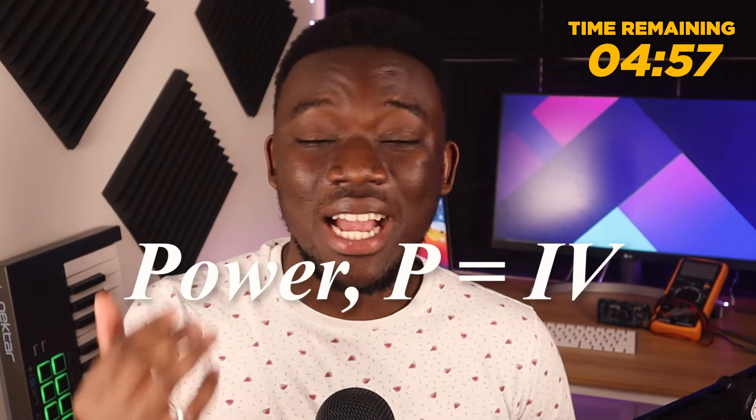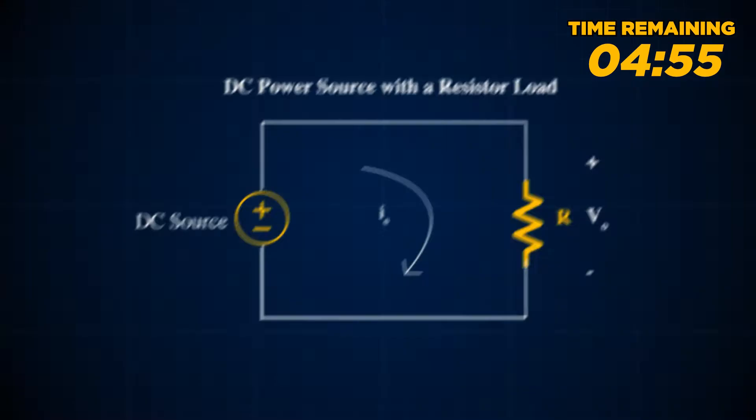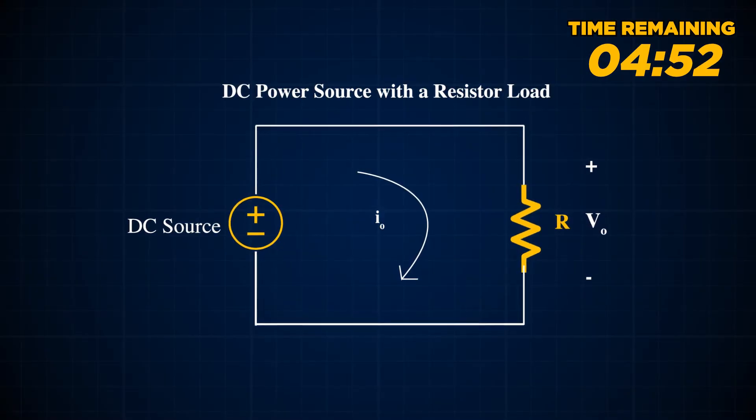In DC circuits, power is simply calculated by multiplying the current by the voltage. In cases where there is a load, like a resistor, the equation becomes I squared times R. This power will always remain the same as long as the value of the load resistor is the same.